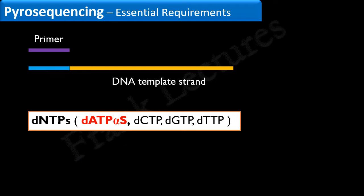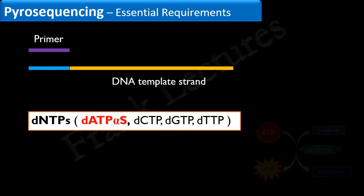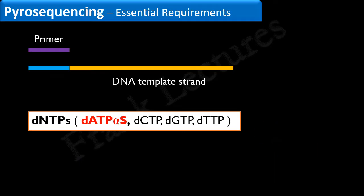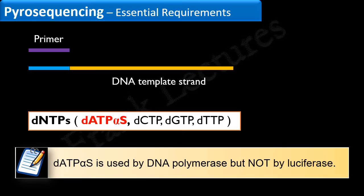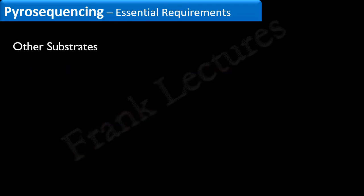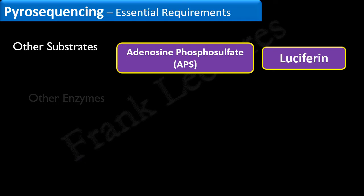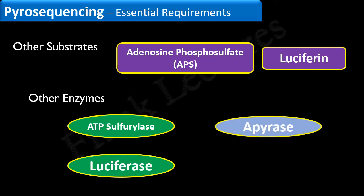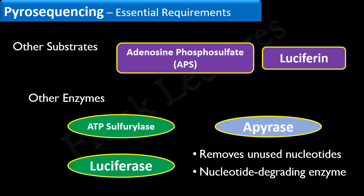Normal dATP is replaced by dATP-alpha-S, that is, deoxyadenosine alpha-thiotriphosphate. This replacement is necessary because the enzyme luciferase also uses ATP to produce light. To avoid false signals during Pyrosequencing, dATP-alpha-S is used — it is recognized by DNA polymerase but not by luciferase. The fourth requirement is DNA polymerase for new strand synthesis. Other substrates required are adenosine phosphosulfate and luciferin, and other enzymes required are ATP sulfurylase and luciferase. An enzyme known as apyrase is also needed — it removes unused nucleotides and is a nucleotide-degrading enzyme.